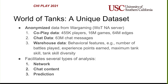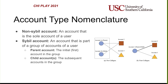This data is very exciting because it helps us conduct three interesting types of analysis. The first is network analysis: how do Sybils impact the network? The second is looking at chat content: how do Sybils speak — is it different from regular accounts? And the third is prediction: can we predict what type of account it is? With that in mind, we'd like to introduce some nomenclature. There are broadly two types of accounts. The first is non-Sybil accounts — those that are the sole account of a user. The second is a Sybil account — an account that is part of a group of accounts belonging to a user. Within that, there are two subtypes: the parent, which is the initial account in the group, and the child account or accounts, which are the subsequent accounts in the group.